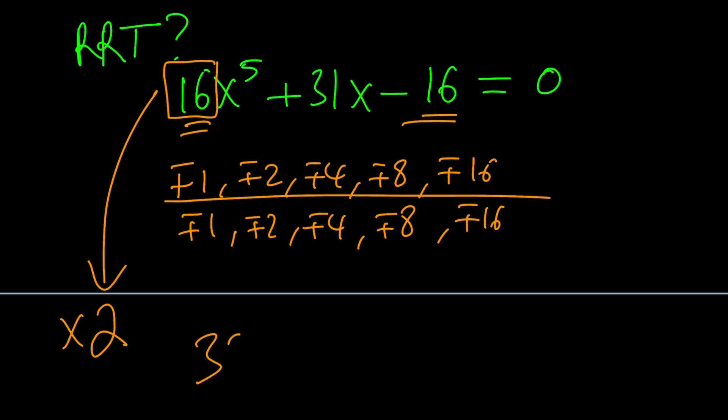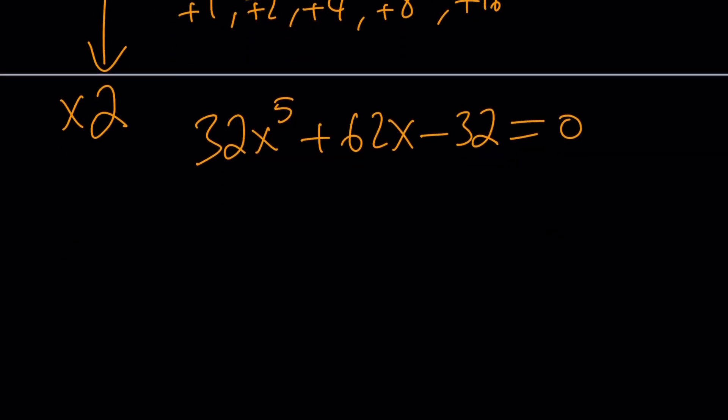That's going to give us 32X to the 5th plus 62X minus 32 equals 0. Awesome. Now, here's what we're going to do. Since 32 is a 5th power, X to the 5th is a 5th power, we can write this as 2X to the 5th power.